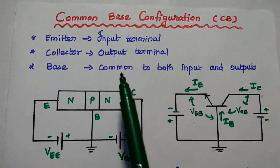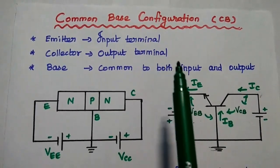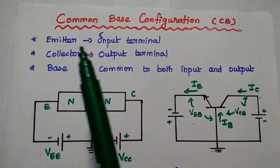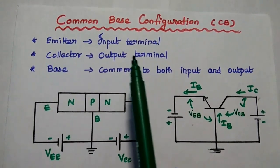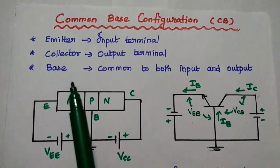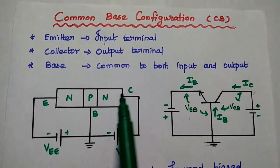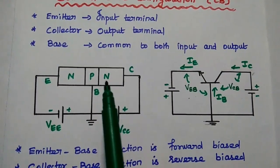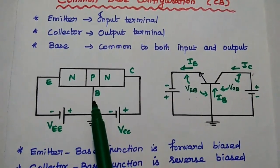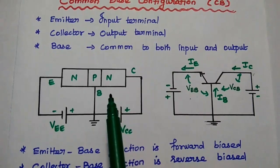Dear students, now we are going to discuss common base configuration in detail. In this configuration, emitter is the input terminal, collector is the output terminal, and base is common to both input and output. This is the circuit diagram. In this, the input is applied between emitter and base, and output is taken from collector and base.